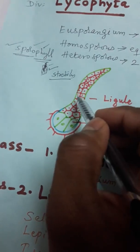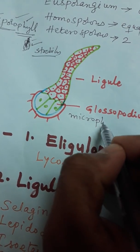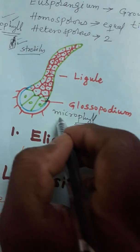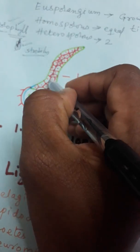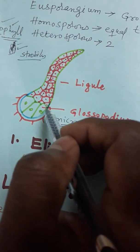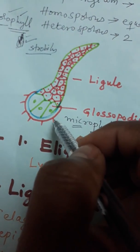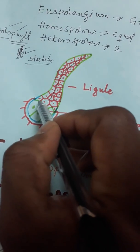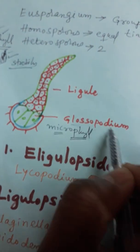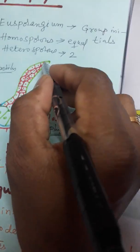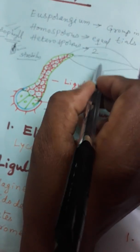In some species of Lycophyta, the leaves are microphylls. Microphyll means a small-sized leaf. The leaf has only one midrib and there is no lateral venation. The base of this leaf has a crescent-shaped structure called glossopodium. The microphyll has only a midrib and no lateral venation.